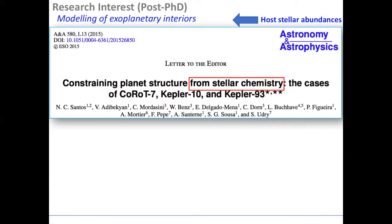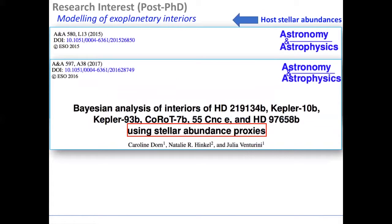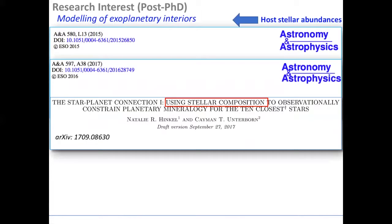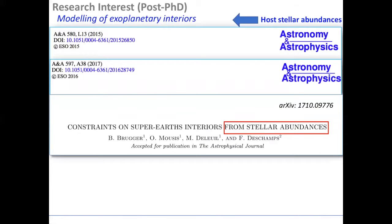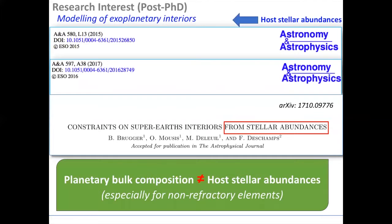For example, these keywords shown here in the titles — bulk stellar chemistry, yielding stellar abundances, yielding stellar composition, and bulk stellar abundances. However, planetary bulk composition is not identical to host stellar abundances, especially for non-refractory elements.